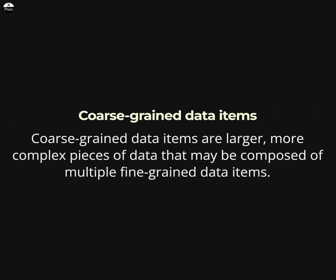Coarse-grained data items are larger, more complex pieces of data that may be composed of multiple fine-grained data items. Examples of coarse-grained data items might include an entire row or table in a database, or an entire object in an object-oriented database.